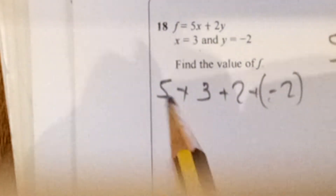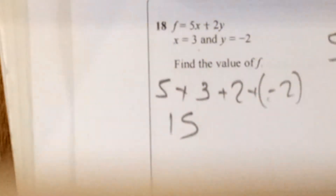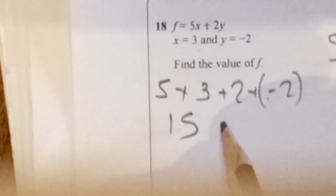So 5 times 3 equals 15. 2 times negative 2 — my calculator naturally puts it into brackets — which is minus 4.